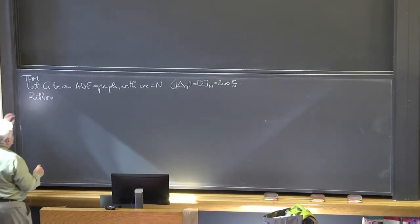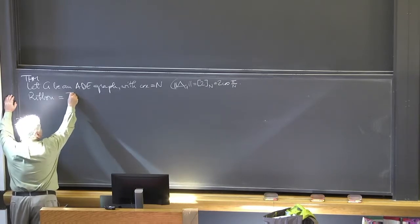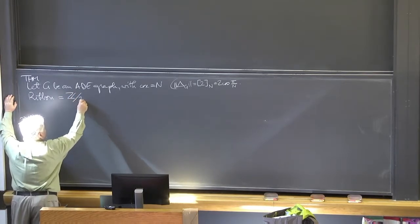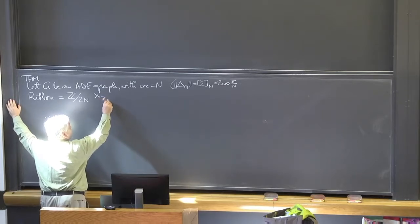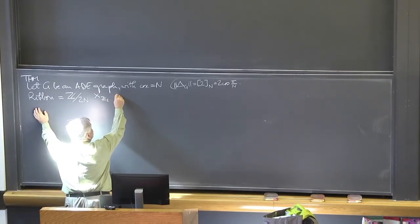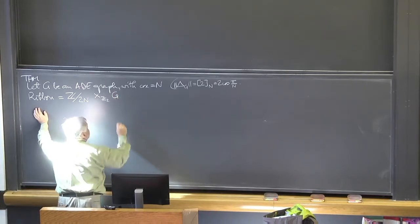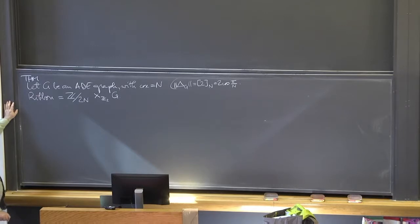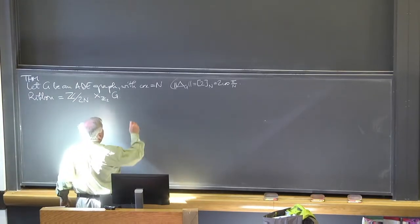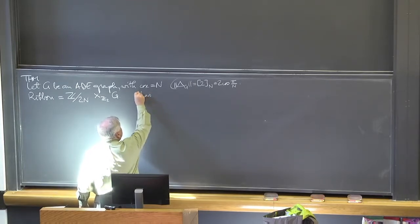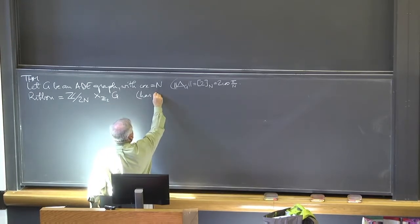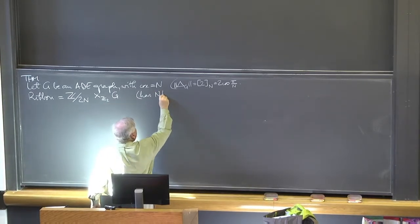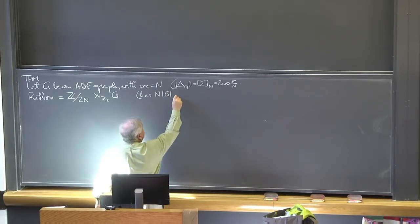We define the ribbon as the integers modulo 2n, Cartesian product over Z mod 2 with G. Since we take it over Z modulo 2, it has n times the dimension of G vertices.